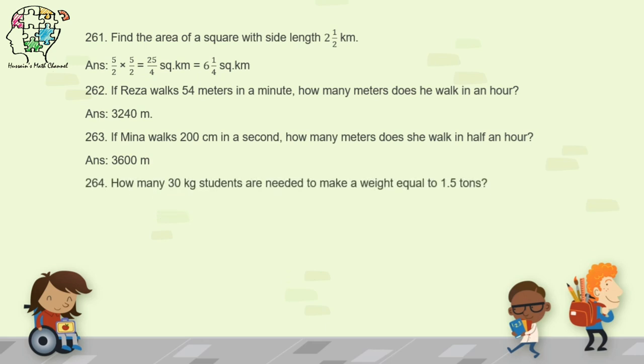Question 264: how many 30 kg students are needed to make a weight equal to 1.5 tons? 1.5 tons equals 1,500 kg. To make 1,500 kg with 30 kg students, you need 50 students. 50 times 30 equals 1,500 kg, which is 1.5 tons.